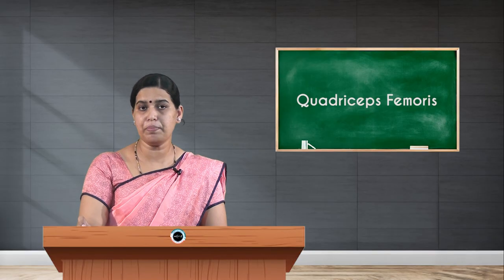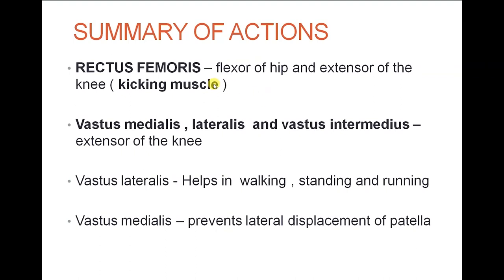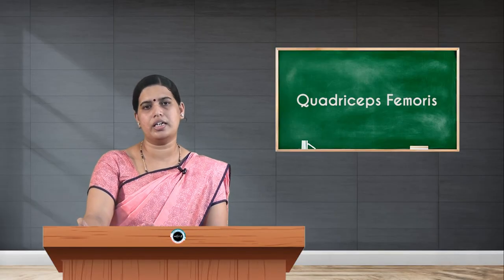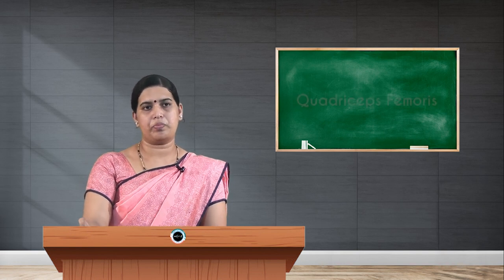In summary, rectus femoris is called the kicking muscle, acting at both the hip and knee — it flexes the hip and extends the knee. The three vasti muscles — vastus intermedius, lateralis, and medialis — all share the common action of extension at the knee joint. Additionally, vastus lateralis assists in walking, running, and standing, while vastus medialis prevents lateral displacement of the patella. Only rectus femoris is the flexor of the hip and extensor of the knee.